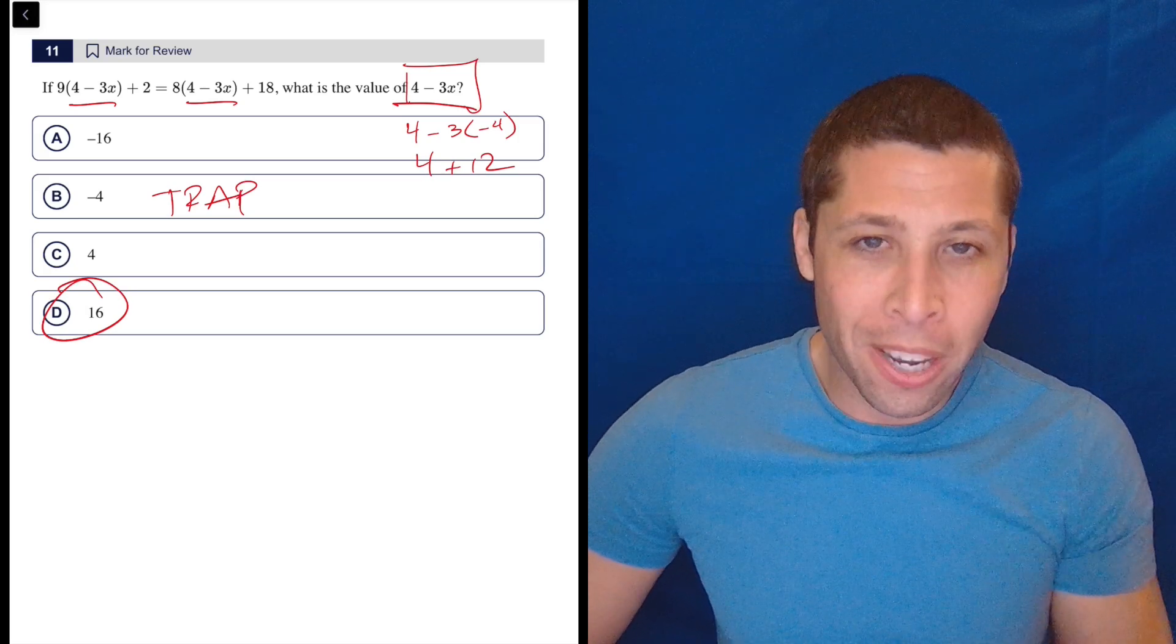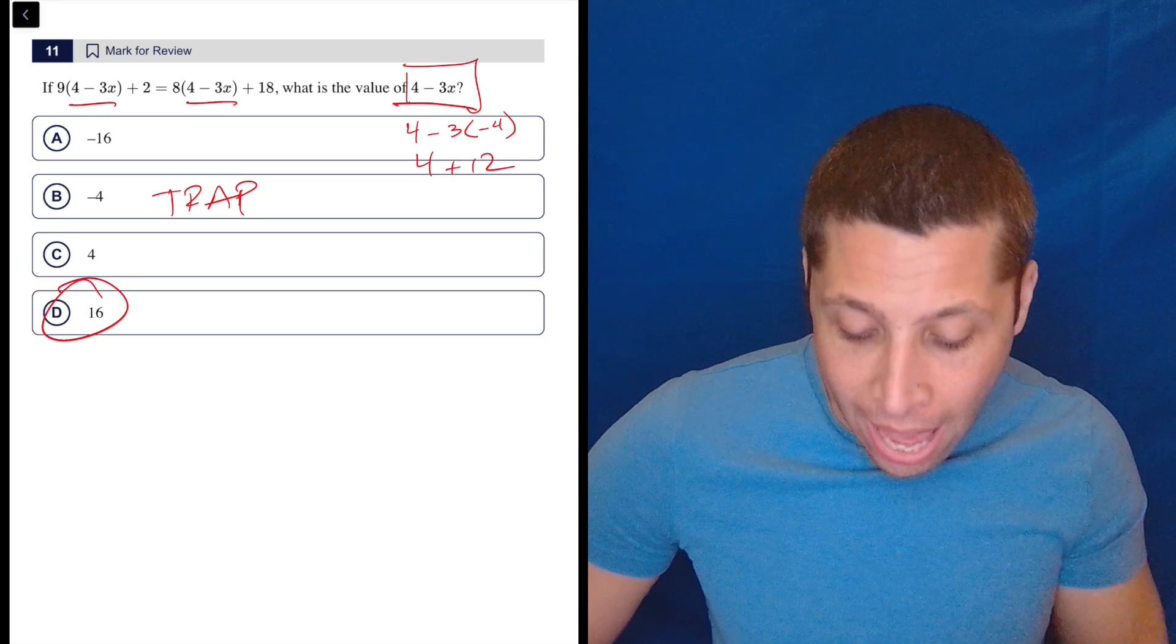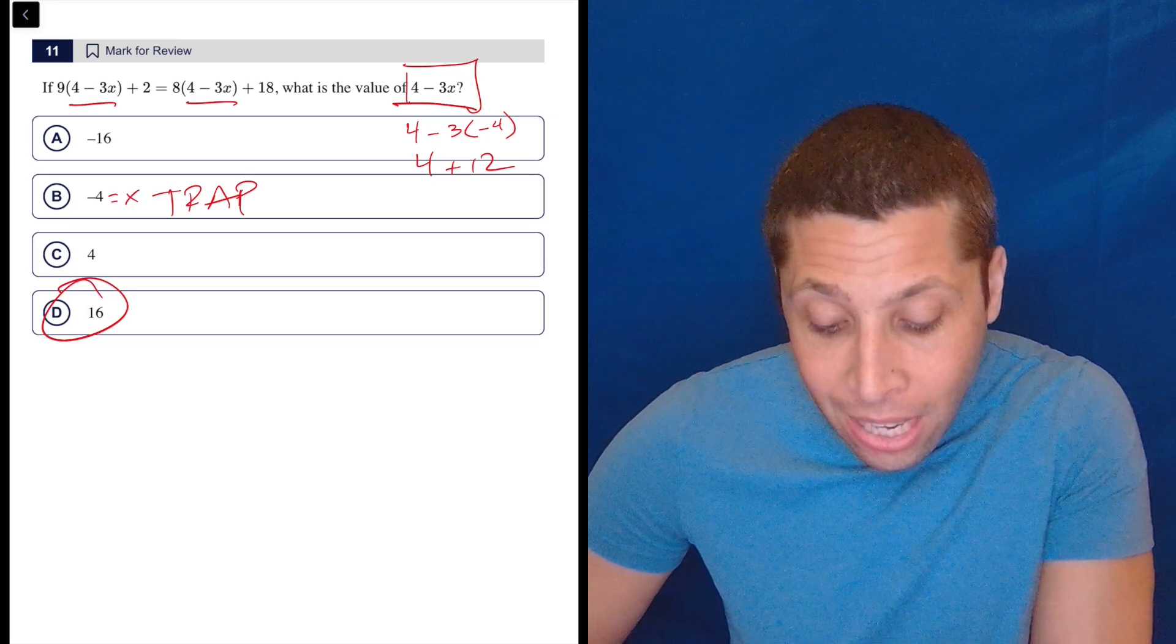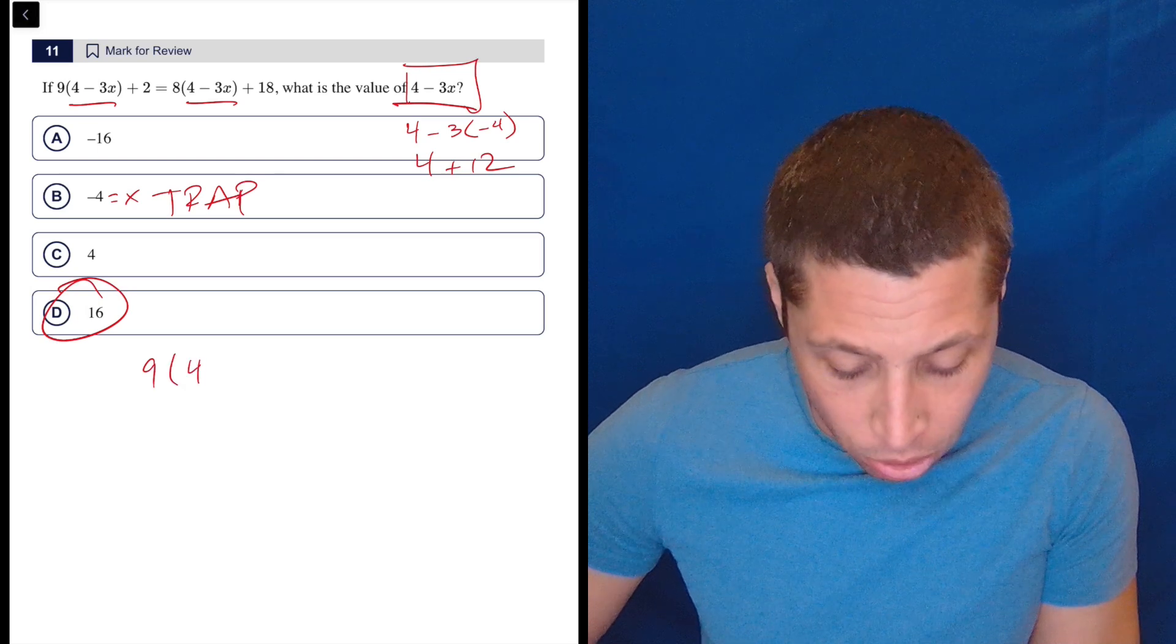Most of you though don't, and you wouldn't even think to do this. You would just out of habit distribute the nine, distribute the eight, combine like terms and solve for X and get X equals negative four anyway. And so you might still fall for the same trap, but there is a little bit of a shortcut that we can do.